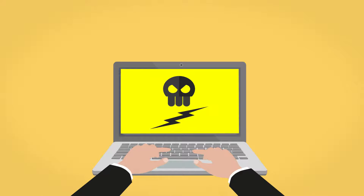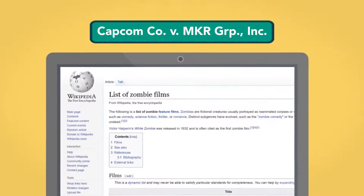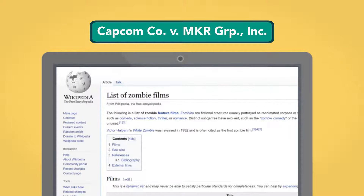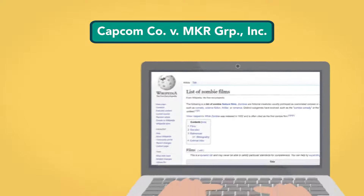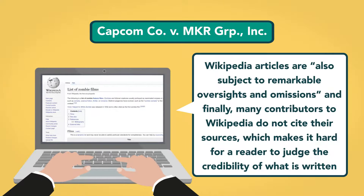Not all websites are created equally, however, and not all qualify as reliable sources. In a case involving a copyright infringement dispute, Capcom Company v. MKR Group Inc., a court declined to take judicial notice of a Wikipedia list of zombie movies, a fact that was critical to the case. First, a Wikipedia article may be, at any given moment, in a bad state — it could be in the middle of a large edit, or it could have been recently vandalized. Second, Wikipedia articles are also subject to remarkable oversights and omissions. Finally, many contributors to Wikipedia do not cite their sources, which makes it hard for a reader to judge the credibility of what's written.